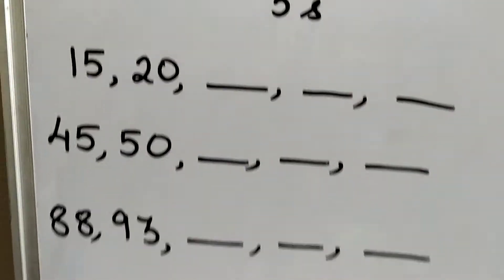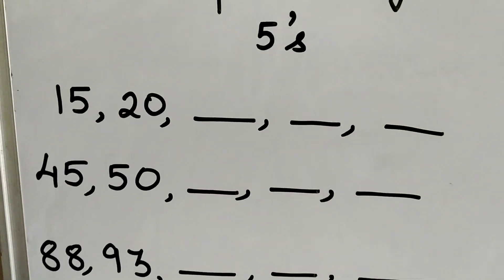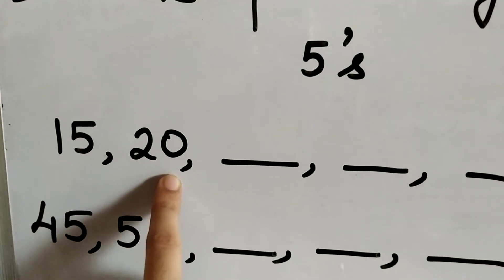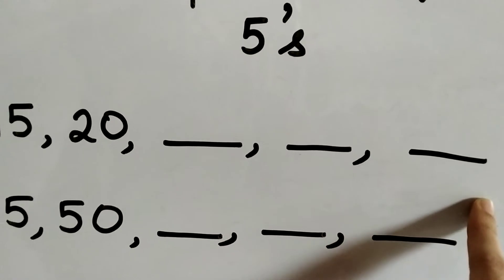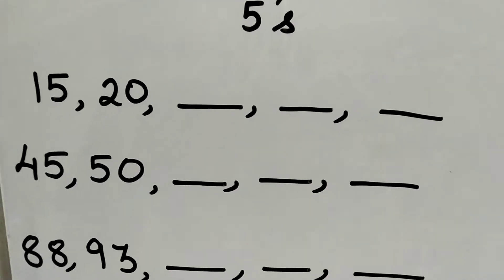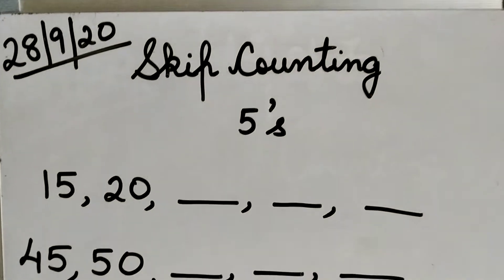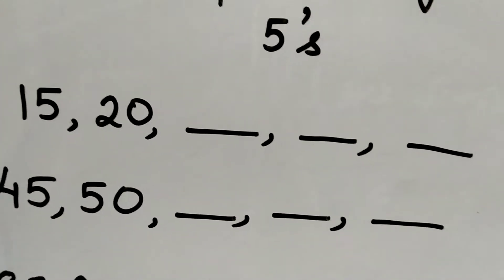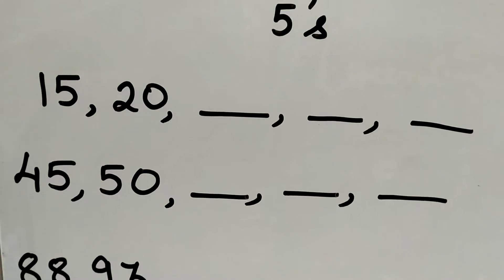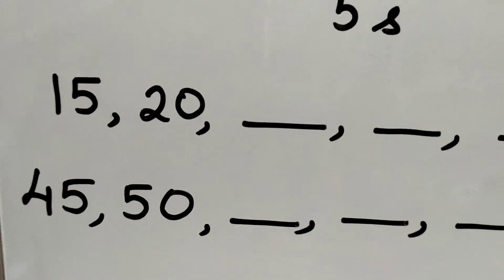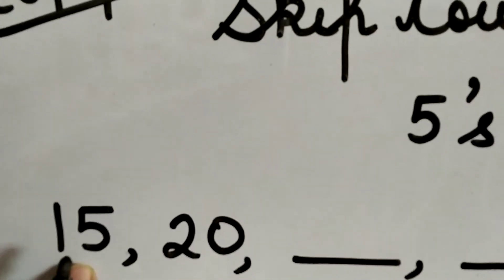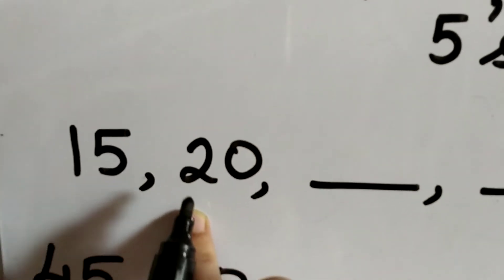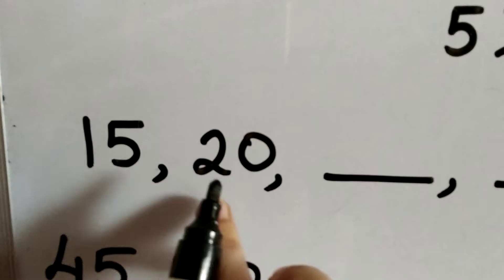Children, as you can see, in all the questions you are given the first two digits. The first one and the second one are given, and there are three blanks in front of them. You need to fill in the blanks with skip counting in fives. The hint of whether the question is skip counting in fives or twos is the difference between the first and the second number.